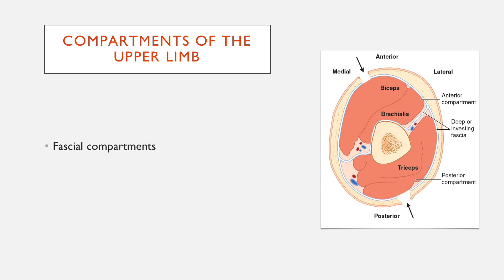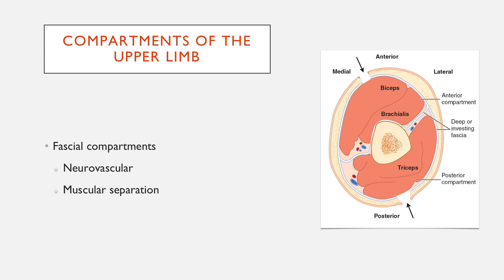This picture here shows the upper arm and how there are two compartments. There's a fascial layer, an anterior compartment where you can see the biceps and the brachialis, and a posterior compartment where you can see the triceps. These are quite useful in that they split things in terms of the neurovascular supply — usually a given nerve and a given vessel, artery and vein, will supply each compartment. It also separates the muscles.